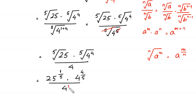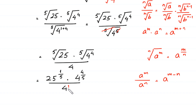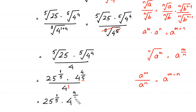Now this 4 in the denominator has power 1. According to the property a to the power m over a to the power n equals a to the power m minus n, we subtract this power 1 from this power 4 over 5. This gives us 25 to the power 1 over 5, times 4 to the power 4 over 5 minus 1.